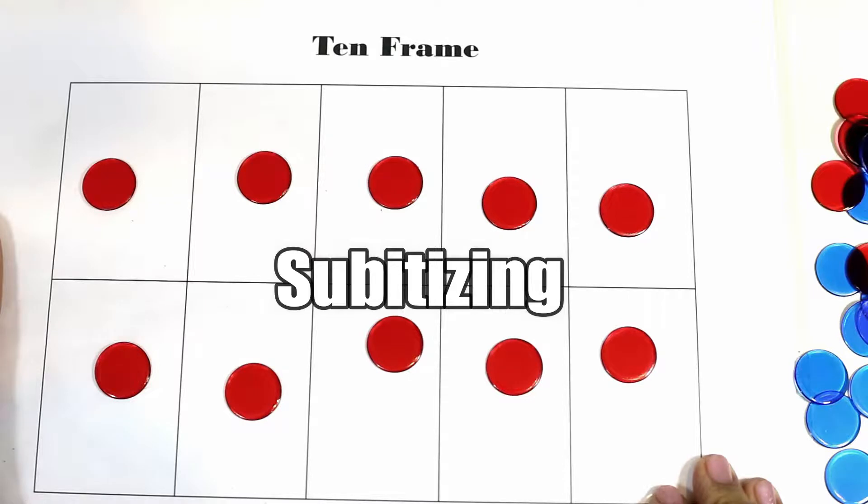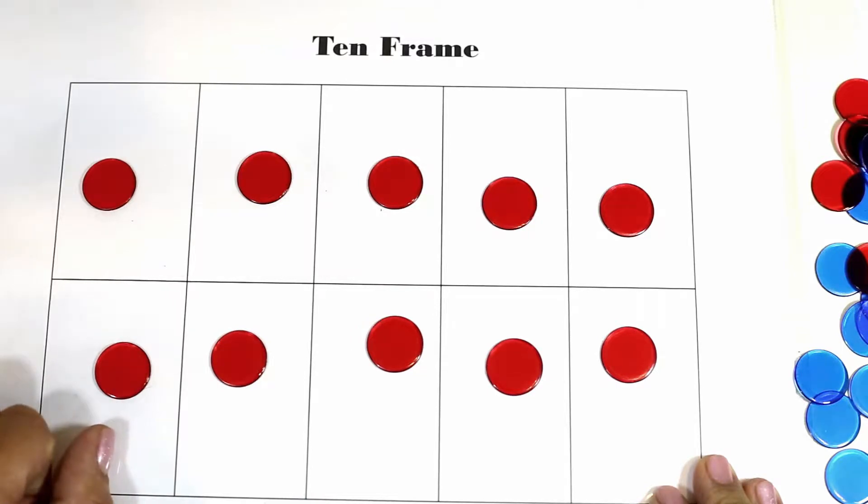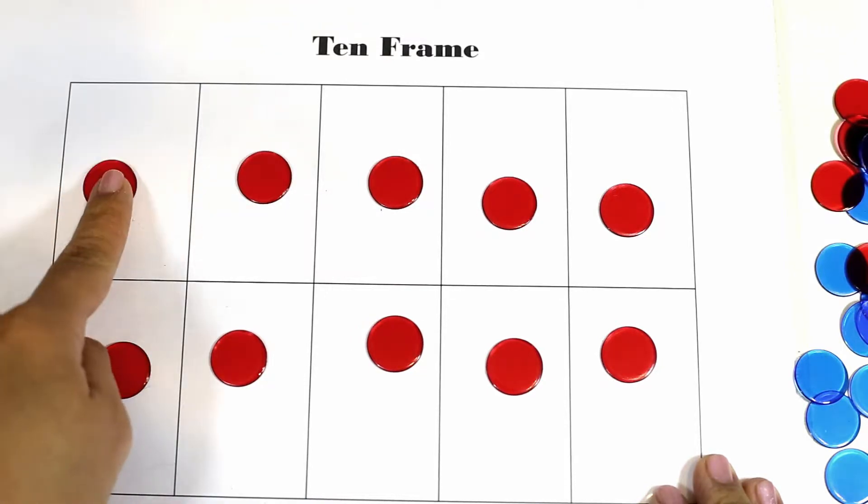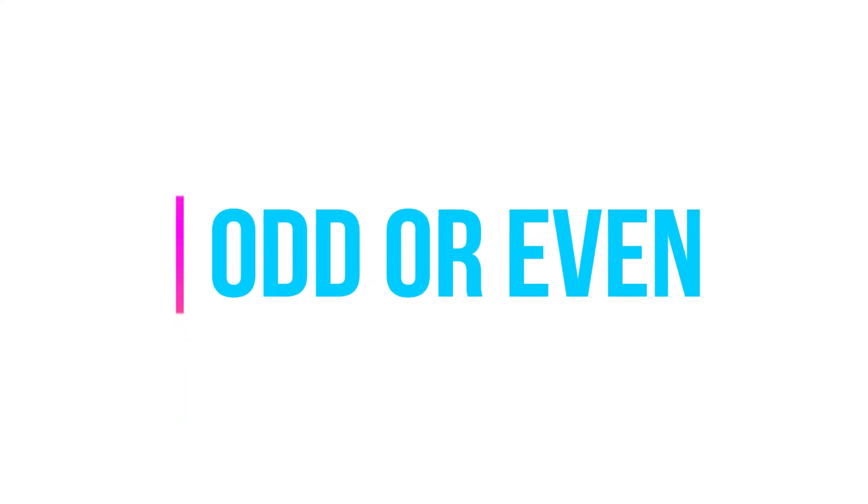And that is called subitizing when they can identify in a group of objects and know how much they are without counting.